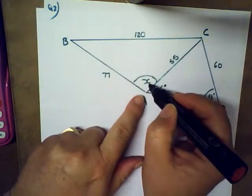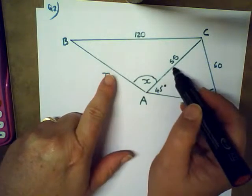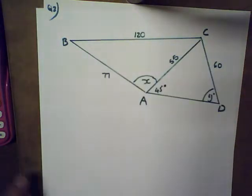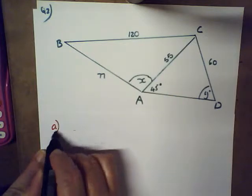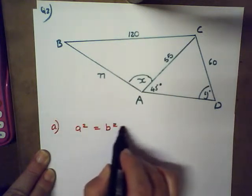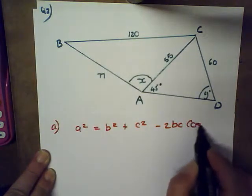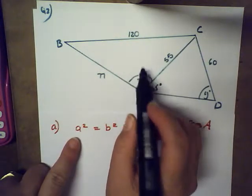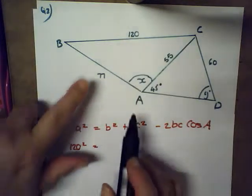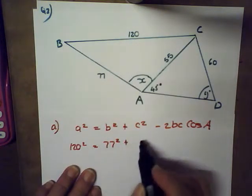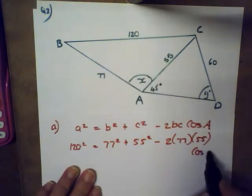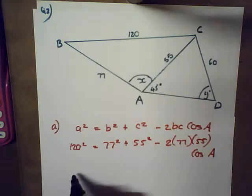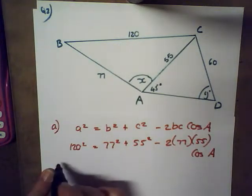For x, I've got the opposite side and two adjacent sides. This is not a right-angled triangle so I cannot use the Pythagorean theorem or standard trig identities. However, I can use the cosine rule: a squared equals b squared plus c squared minus 2bc cos A. Here a squared, opposite the angle I want, is 120 squared. So: 120 squared equals 77 squared plus 55 squared minus 2 times 77 times 55 times cos A.